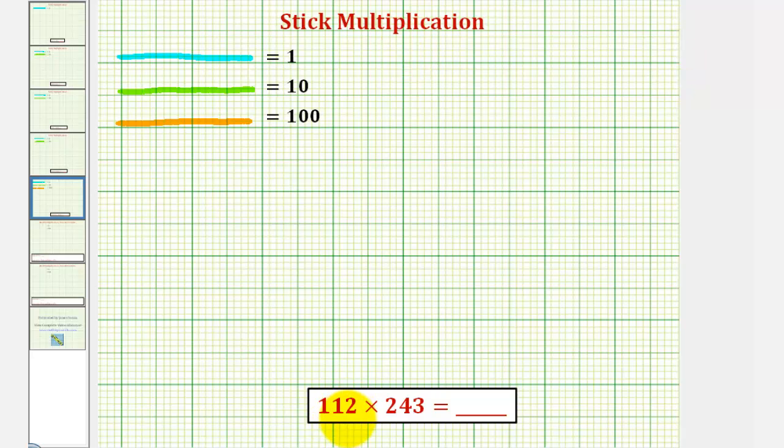We want to find the product of 112 and 243 using stick multiplication, which can also be called Mayan multiplication or Japanese multiplication.